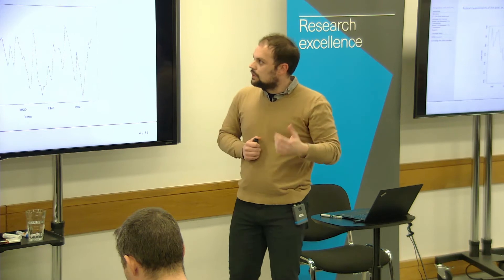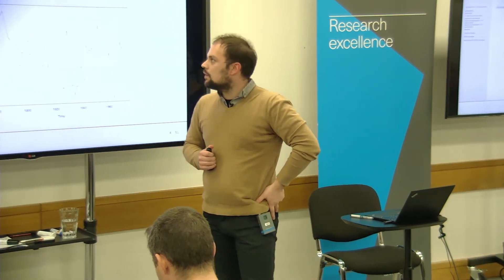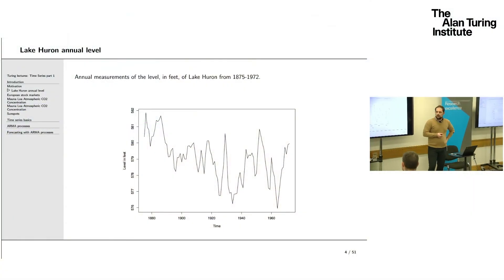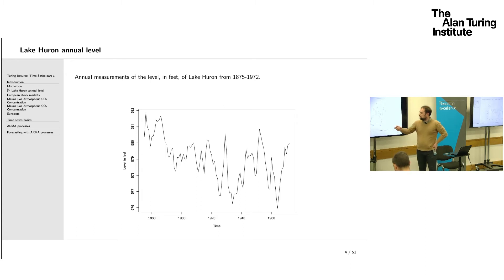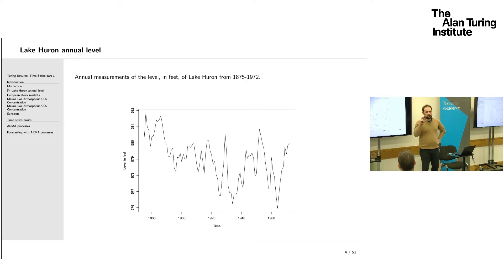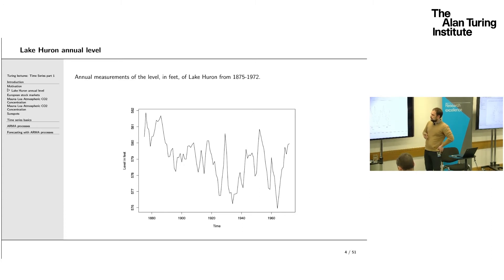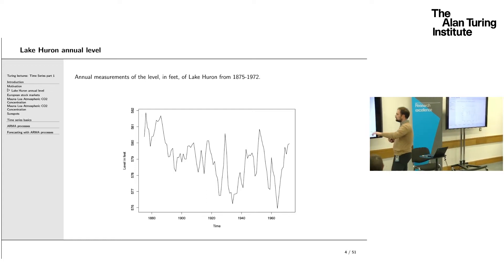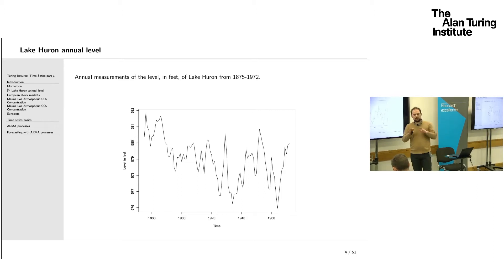Here are a couple of standard datasets available in R. The first shows annual measurements of the level in feet of Lake Huron from 1875 to 1972, plotted over time. We might ask: are these measurements independent? Does the process have a constant mean, or does it fluctuate around a constant level? It doesn't look like that — there seems to be a decreasing mean in the series, and potentially the variance might inflate over time.